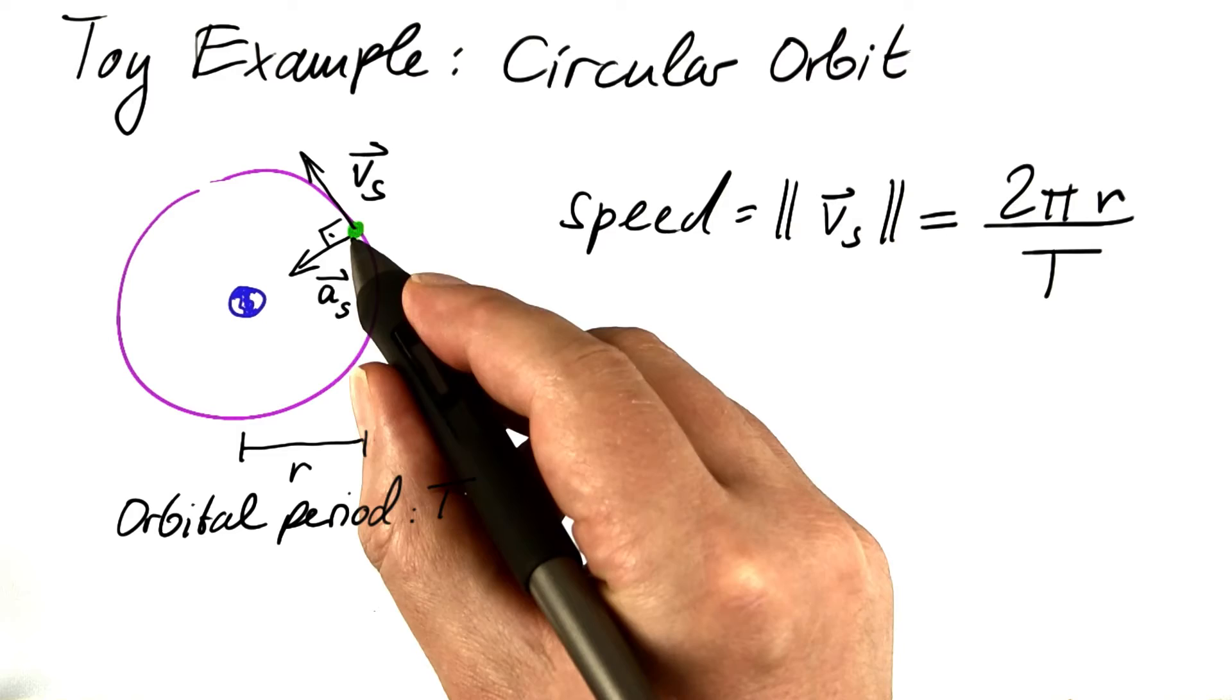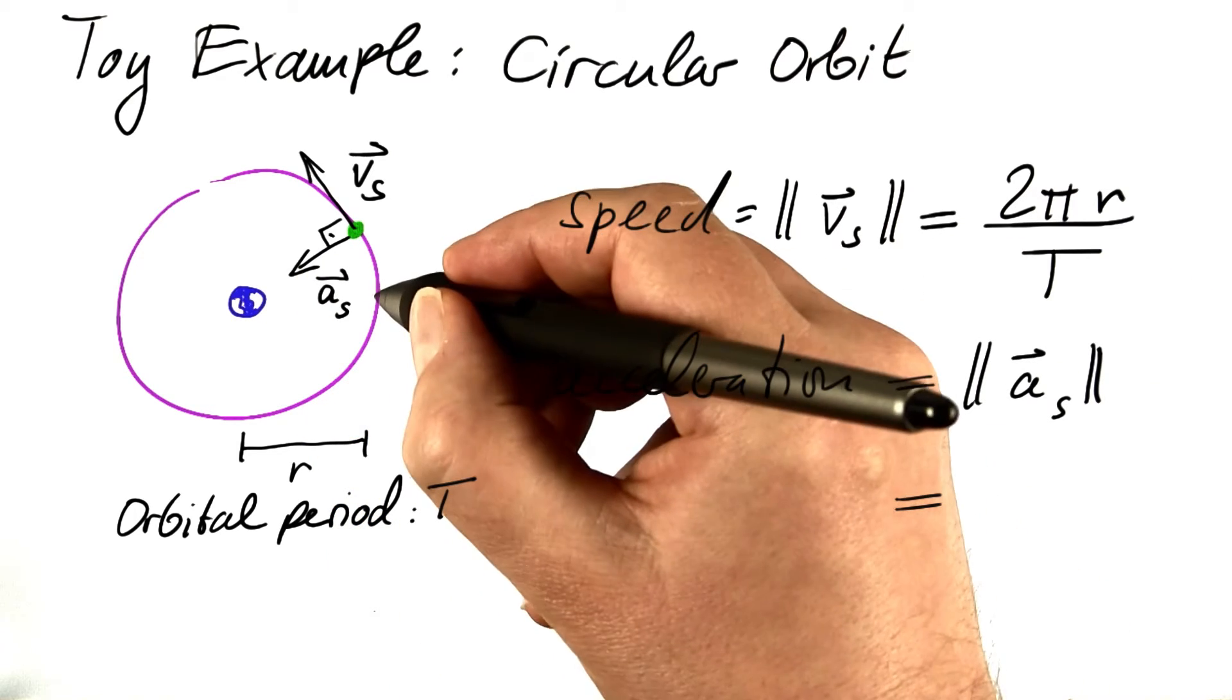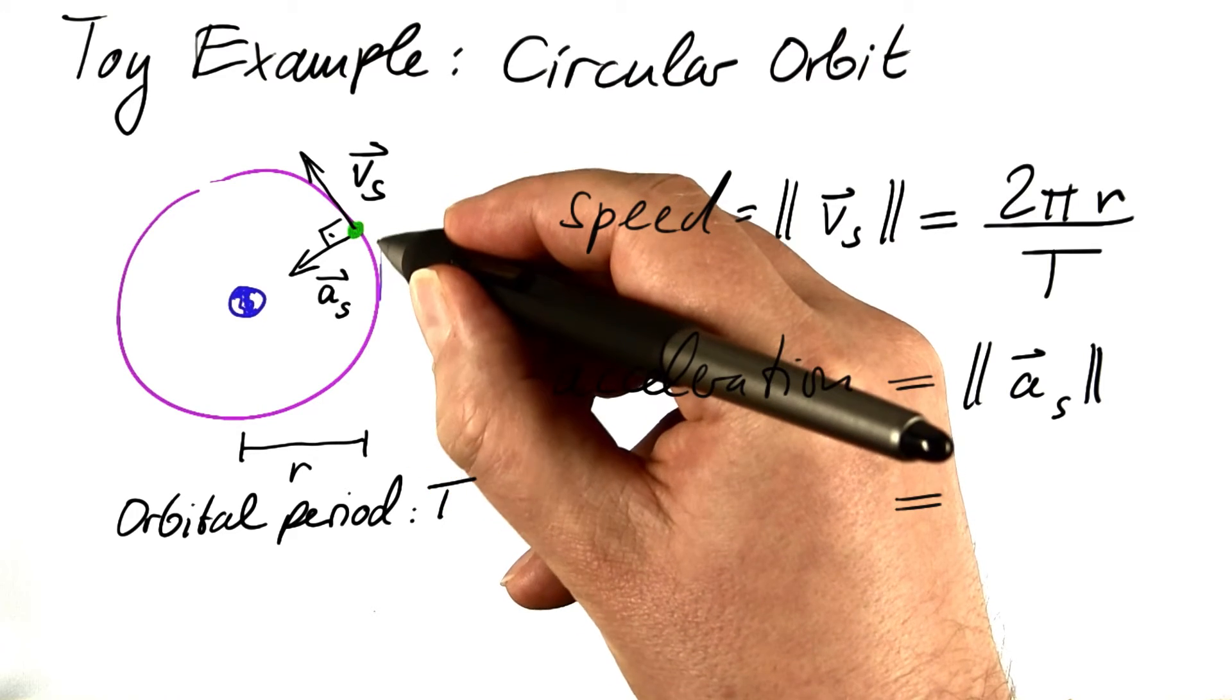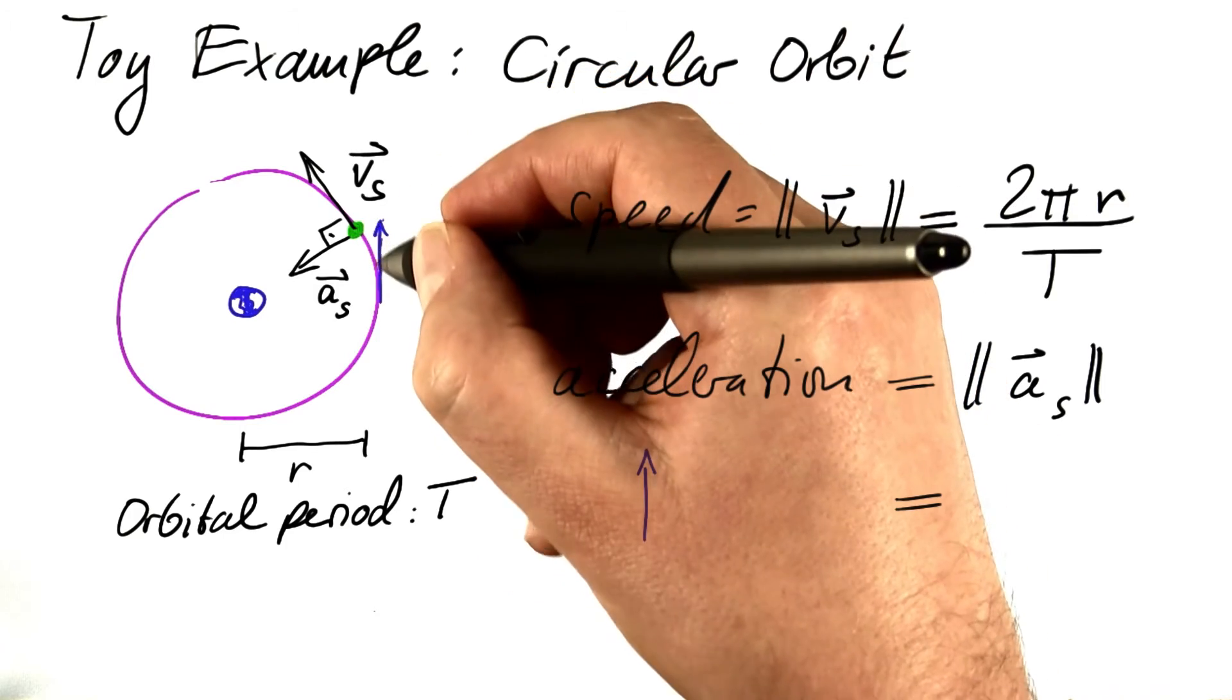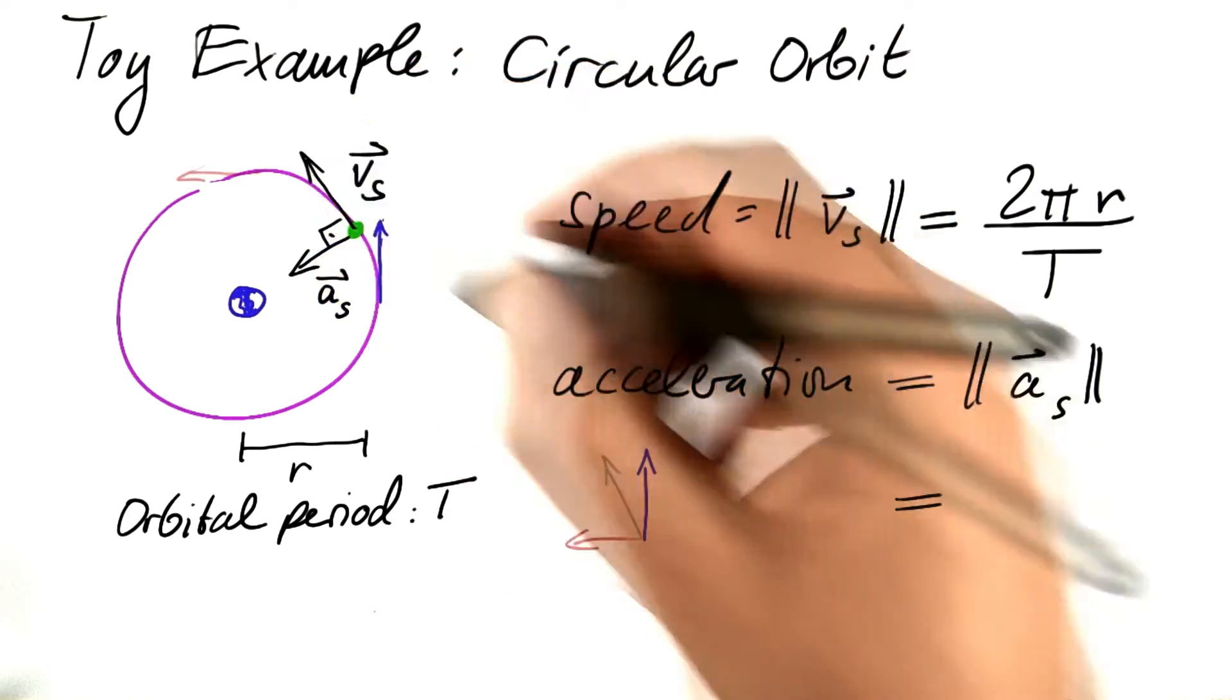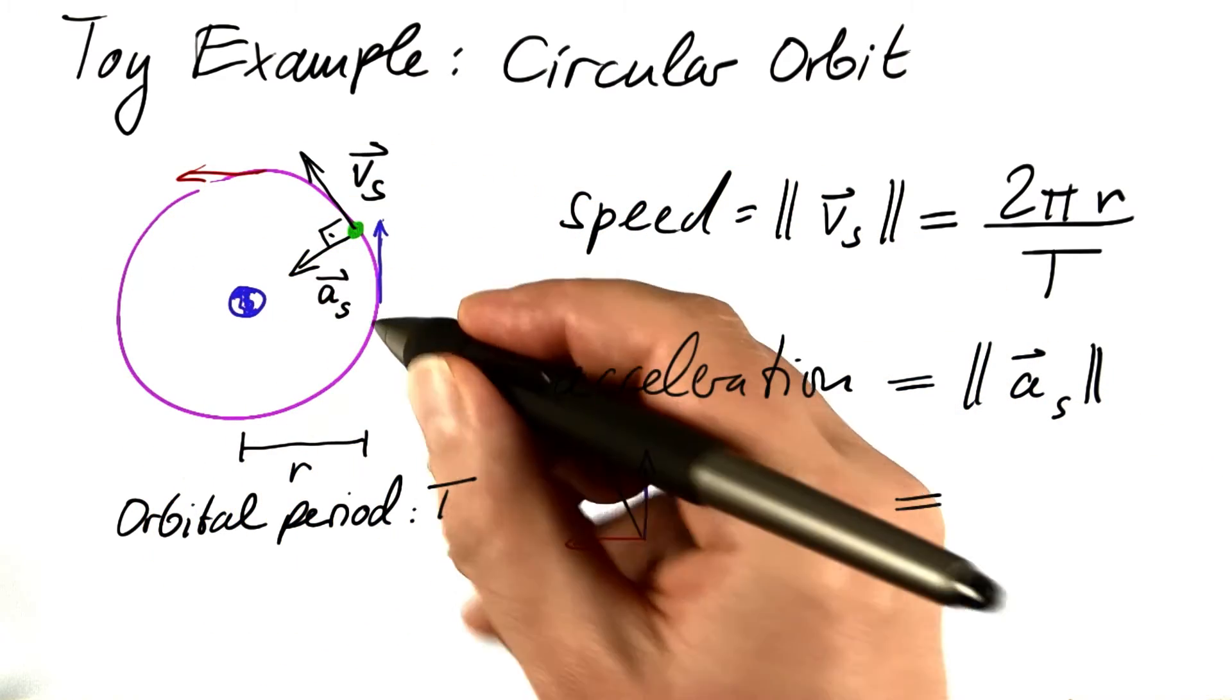We can compute the length of that acceleration vector in a similar fashion. This goes as follows. We start with the velocity vector that takes us up, and then we move, and then the velocity vector changes to the left. At this point, it points to the left, and eventually it goes round full circle.